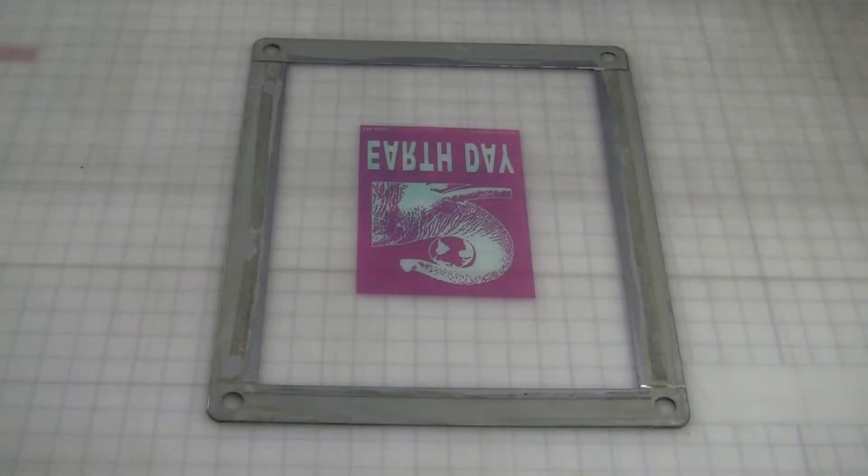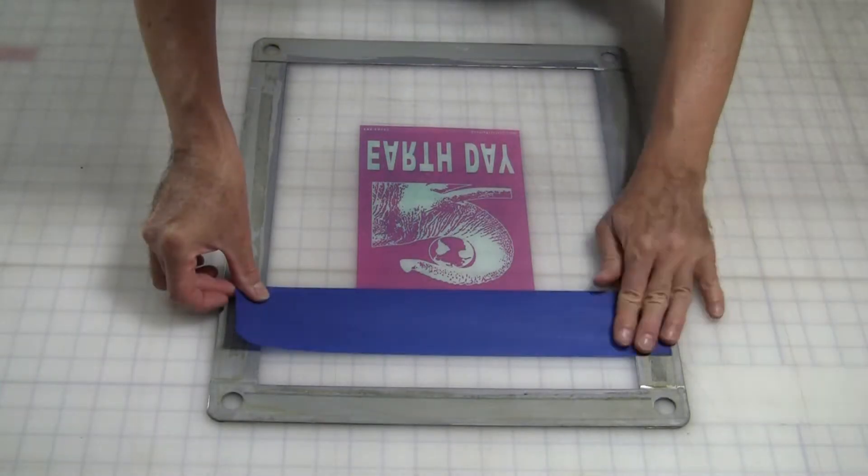Place the frame bottom side up on your table. Position your stencil, also bottom side up, to the desired location. Now tape it to the frame.